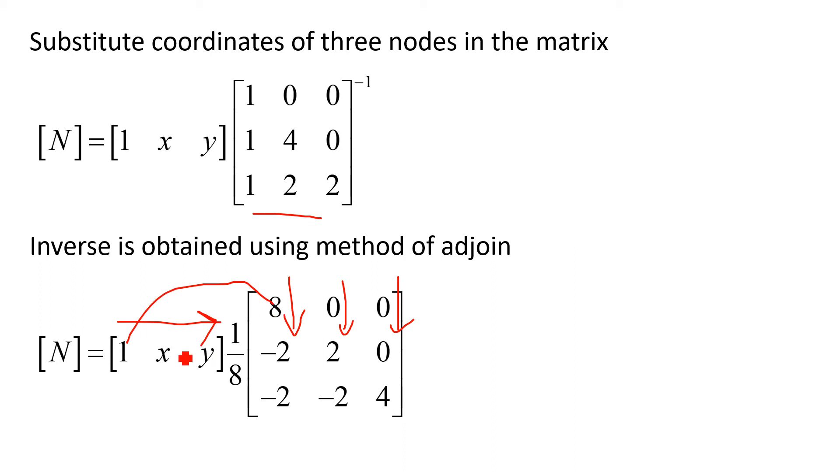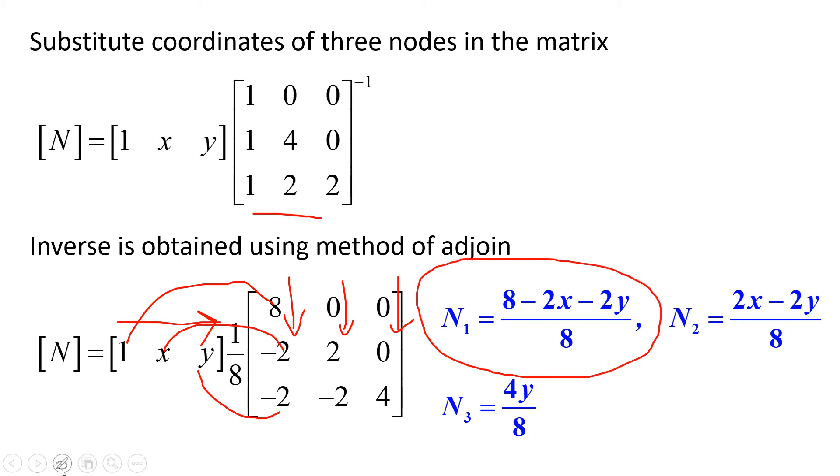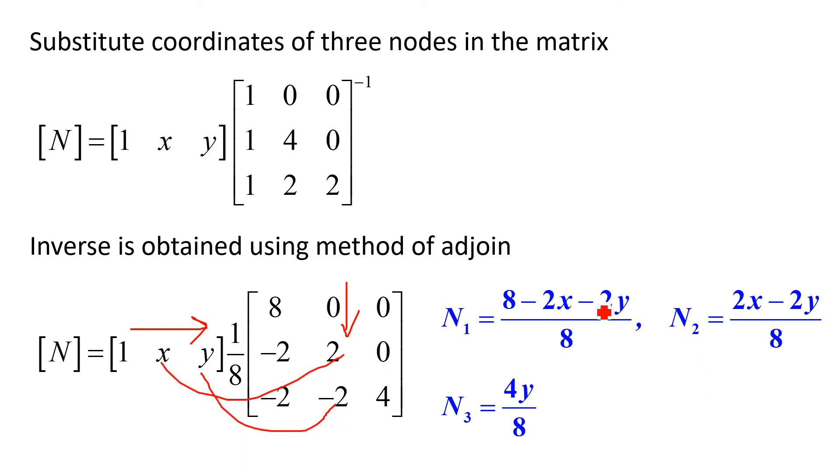If you multiply this row with 1 by 3 columns of this inverse, we will get the 3 shape functions of given CST element. 1 into 8 is 8, X into minus 2 is minus 2X, and Y into minus 2 is minus 2Y. So N1 is equal to (8 minus 2X minus 2Y) upon 8.